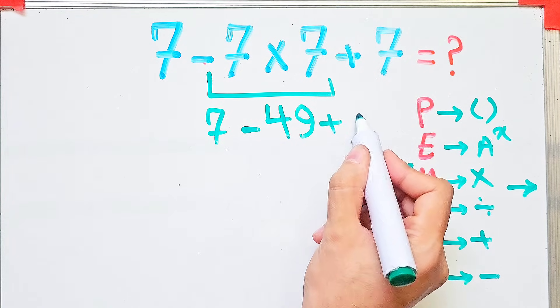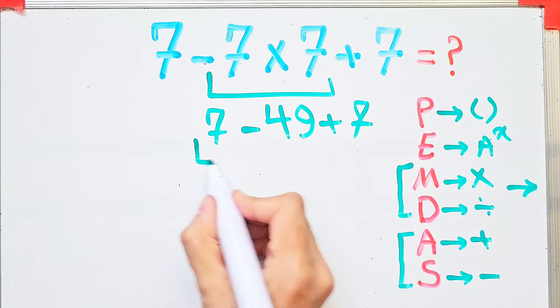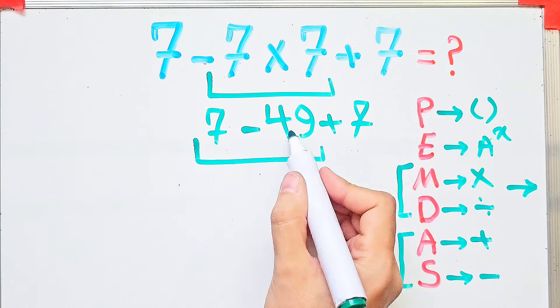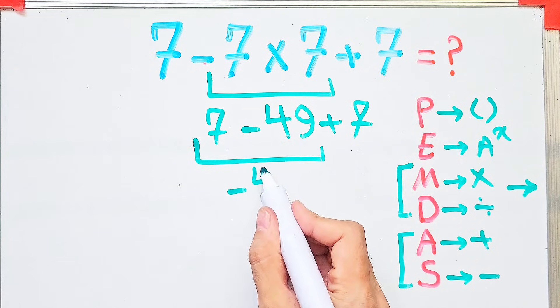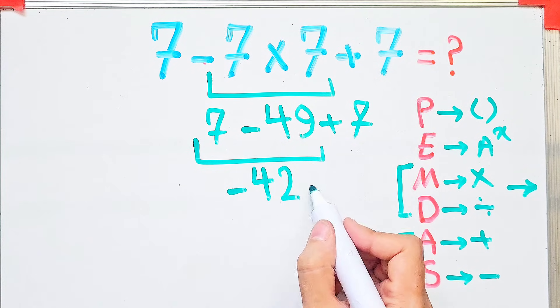Seven minus 49 equals negative 42. Now we have negative 42 plus seven. Negative 42 plus seven equals negative 35.